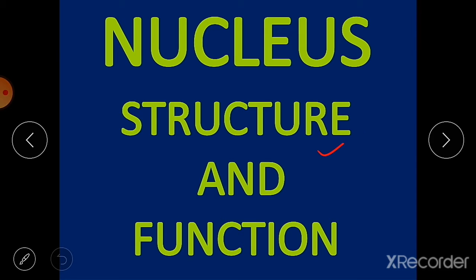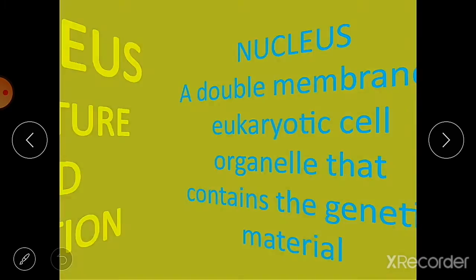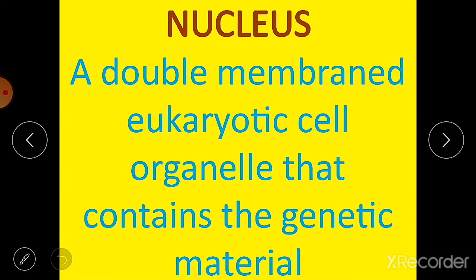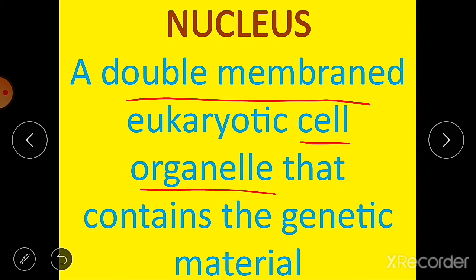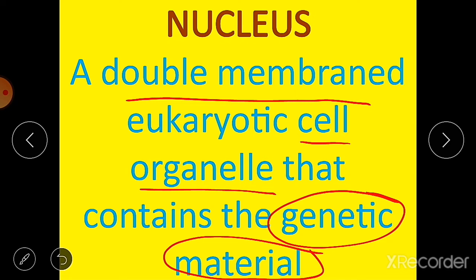We will see its structure and function. A nucleus is a double membrane eukaryotic cell organelle that contains the genetic material. It is generally found at the center of the cell and is very important because it contains the genetic material necessary for the transmission of hereditary traits from one generation to another.